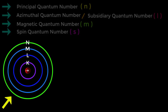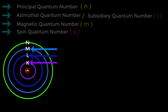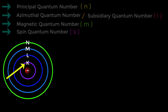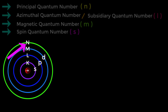Look at this diagram of an atom. These are the shells: K shell, L shell, M shell, and N shell. In these shells there are sub-shells. In K shell there is S sub-shell. In L shell there are S and P sub-shells. In M shell there are S, P, and D sub-shells. In N shell there is also the F sub-shell.